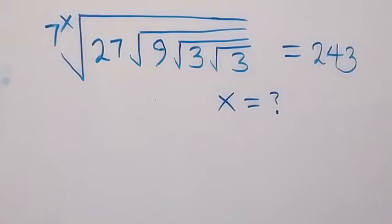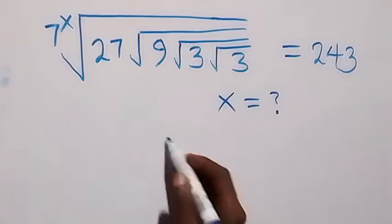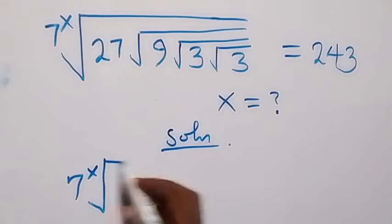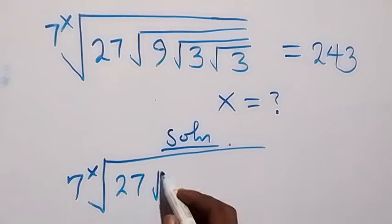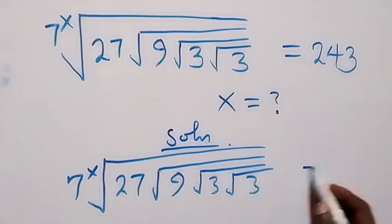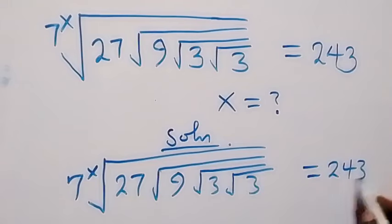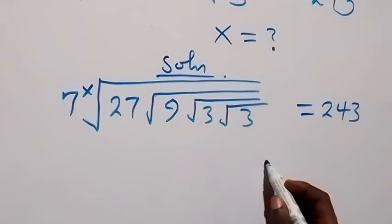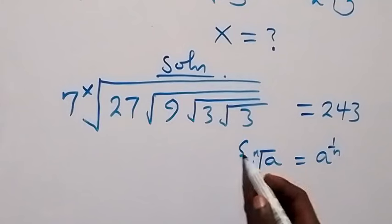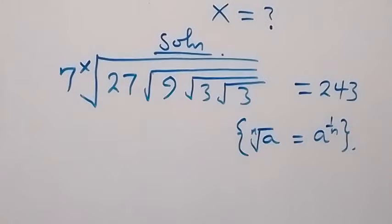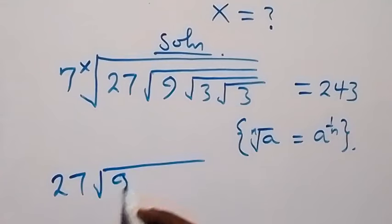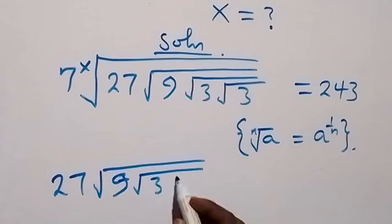Hello, you are welcome. How to solve this nice square root problem. From here, what is given: we have 7^x times the square root of 27, then square root of 9, then square root of 3, square root of 3, equals 2. When we have something of the form nth root of a, this can be written as a raised to power 1 over n. Applying this, we can write: 27 then root 9 then square root of 3, square root of 3.